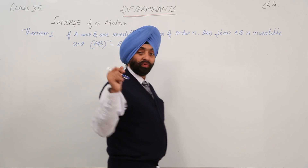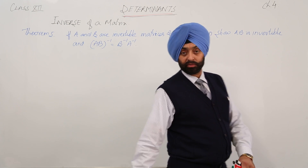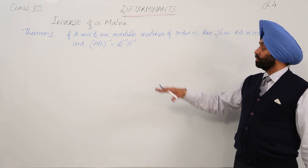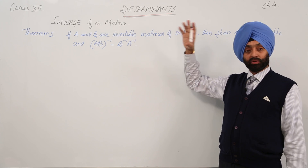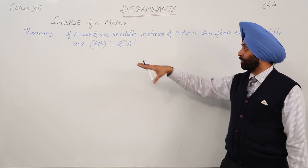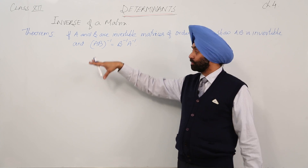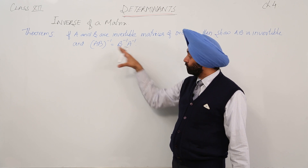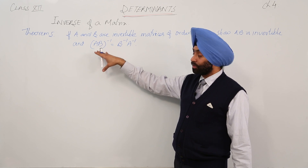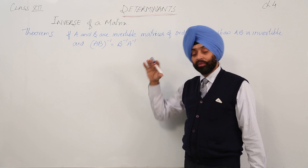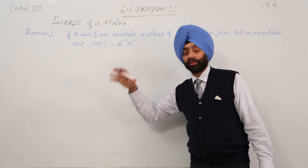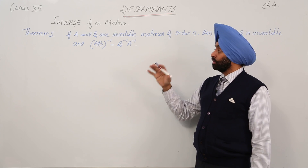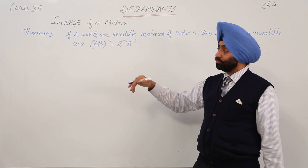Now, again we are having a very important result for the inverse part. Although you are already aware of this result in the transpose — we have done in the transpose that transpose of AB is equal to transpose of B multiplied by transpose of A. Now, we are in the inverse. So, what our theorem says?